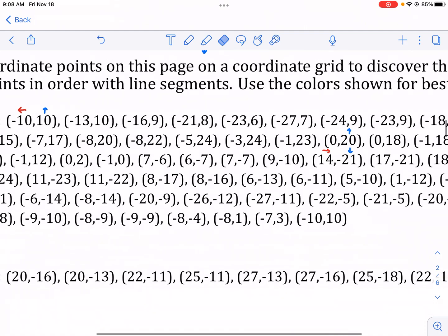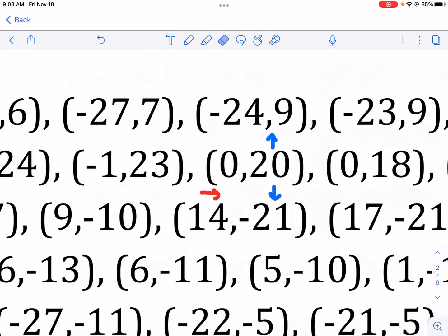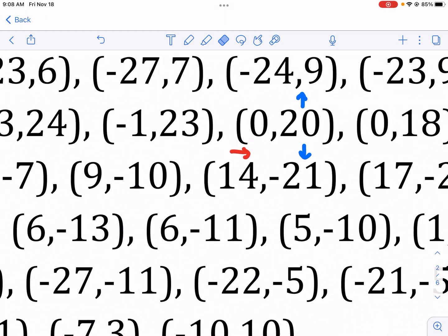Okay, and I'm gonna keep doing this. So just a couple notes. If we have 0, 20, as I'm trying to zoom in there, okay, so 0, 20, we're just gonna go up 20. The 0 for the X means we don't go either left nor right. Okay, and then right below that we have positive 14, negative 21. That means I'm gonna go right 14 units and then down 21 units.